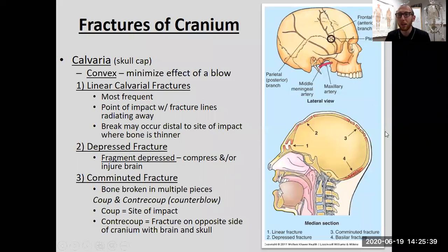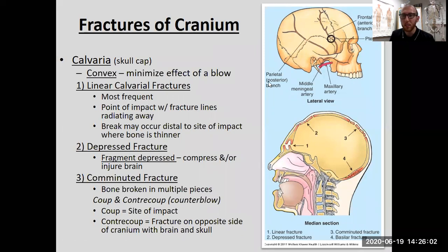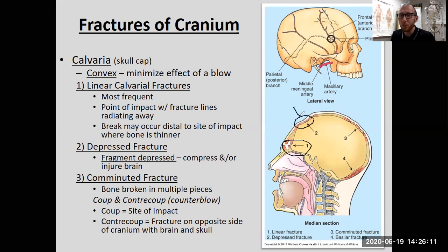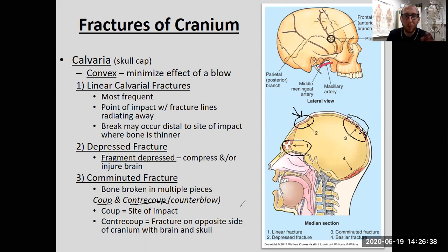With the skull, we've got to talk about fractures. Someone falls, hits their head, car accident — you might see a lot of this in the ER. There are five main types. Linear is the most common — just a fracture straight across. Next is the depressed fracture, where it's pushing in on the skull. Comminuted is the new word for compound — different pieces broken up — and it's often a result of coup and contrecoup. Look up what those words mean and how they produce that type of fracture.